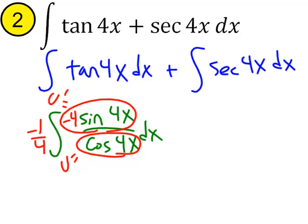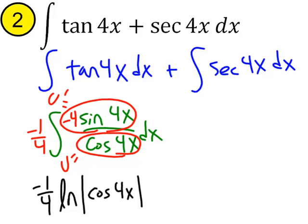And when we integrate, we'll get LN, absolute value of U, which in this case is cosine 4x, with the negative 1 fourth out in front. I won't do a plus C quite yet, because I've still got this other integral to deal with.